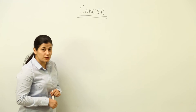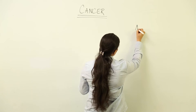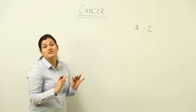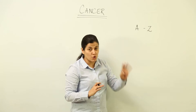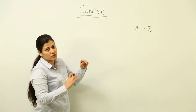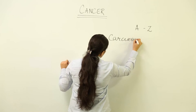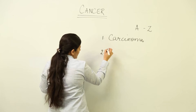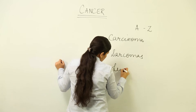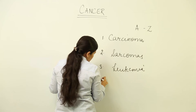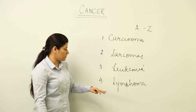First of all, we need to know how many types of cancers can occur in the body. From A to Z, there are cancers for every alphabet. But we are not going to get into all of that. We are going to see the four different categories of cancer. The first type is carcinoma, the second is sarcoma, the third is leukemia, and the last one is lymphoma.